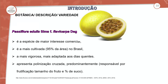A variedade Passiflora edulis flavicarpa é a espécie de mais interesse comercial, a mais encontrada no supermercado e a mais cultivada com 95% da área. Dentro da área de cultivo no Brasil, ela está presente em 95%. É a mais vigorosa e a mais adaptada para ambientes quentes — não só aqui em Rondônia, mas no Brasil inteiro, pela sua capacidade de estar bem adaptada às temperaturas altas.